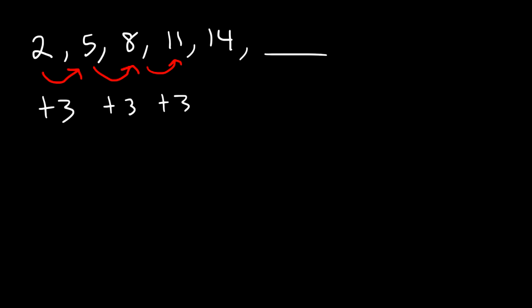17 plus 3 will give us the next number 20. So anytime you have a sequence that differs by repeated addition or subtraction, it's an arithmetic sequence.